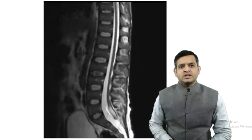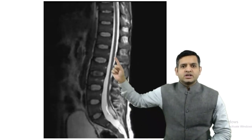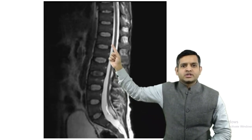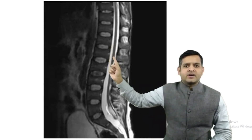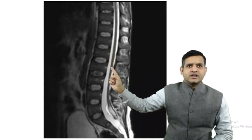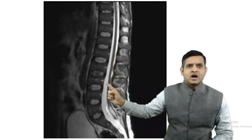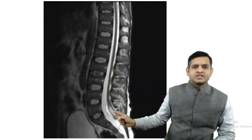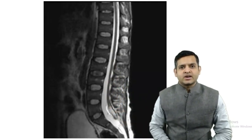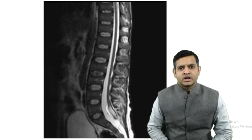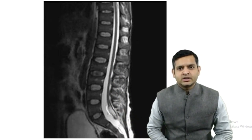In this image, you could see that the cord is not ending at the L1 level. Rather, it is going down, down, down and reaching up to the S2 level, suggesting a low-lying cord or a tethered cord.